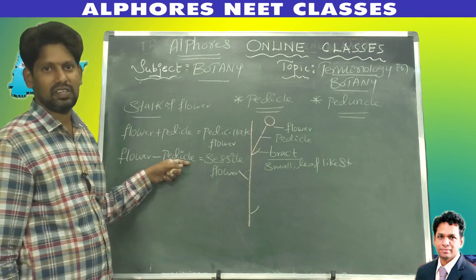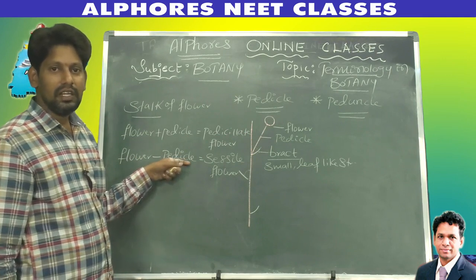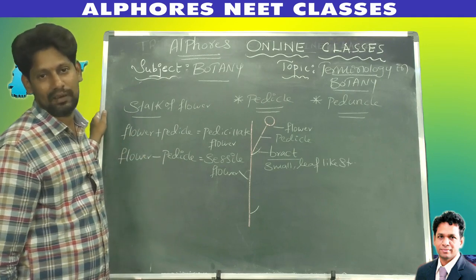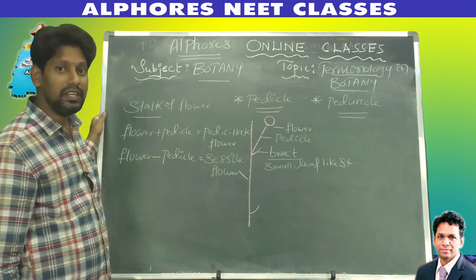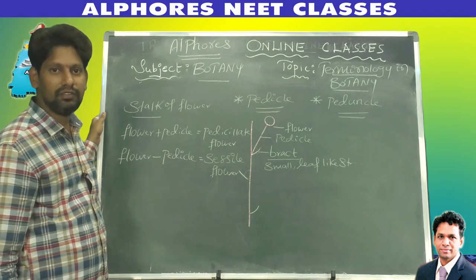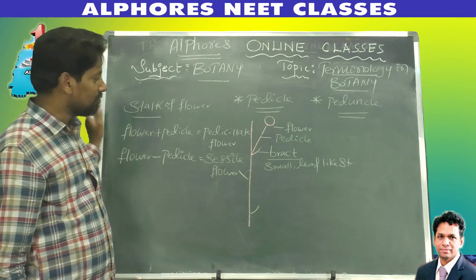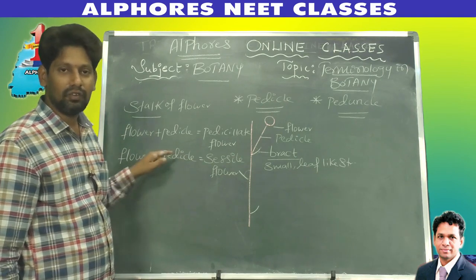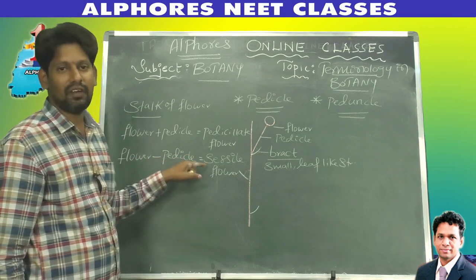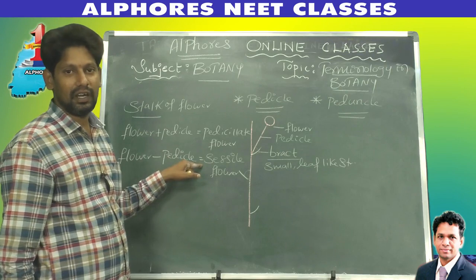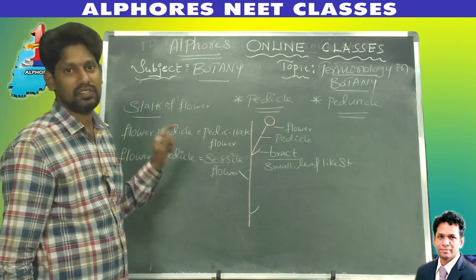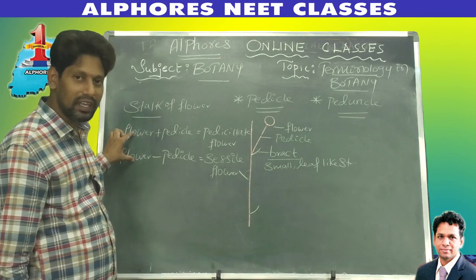Listen to this statement: a leaf is sessile if the petiole is absent. A flower is sessile if the pedicel is absent. If pedicel is absent, the flower becomes sessile. If petiole is absent, the leaf becomes sessile.